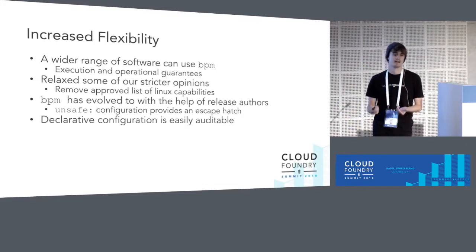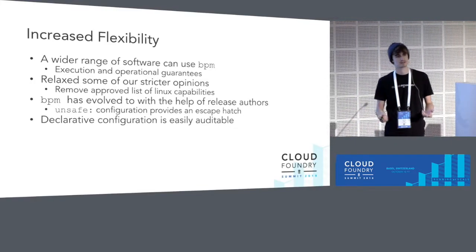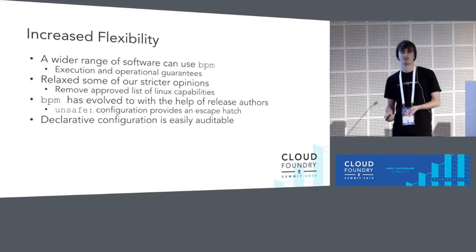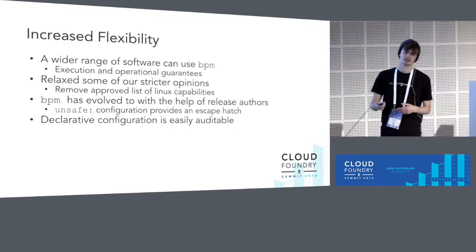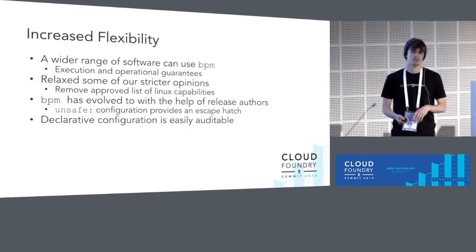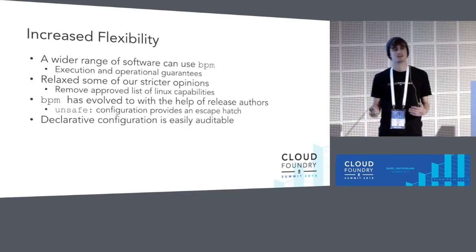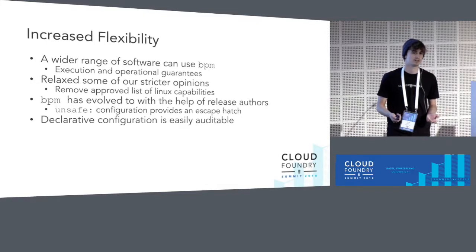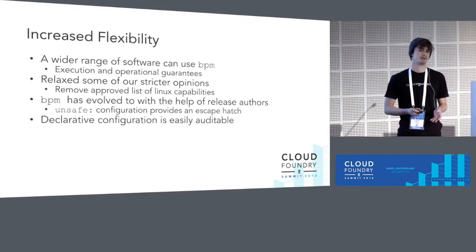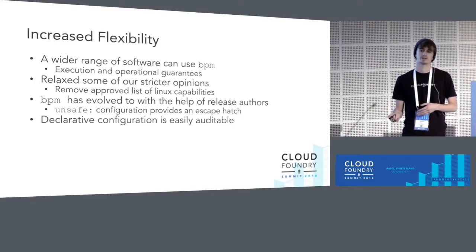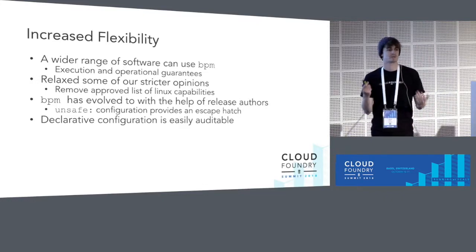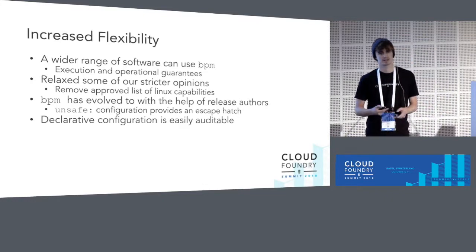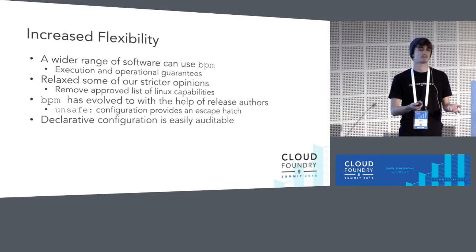The two major use cases for that are software that doesn't conform to Bosch's standards and can't be forced into those two directories, and software that needs to execute other jobs — people need to mount varvcap jobs so they can call out to configured binaries. While we've implemented this flexibility and stepped back from some security guarantees, the declarative configuration still allows organizations and operators to audit what a job is going to do before deploying it. We can take time to identify these anomalies and either fix them or be aware of them going forward.